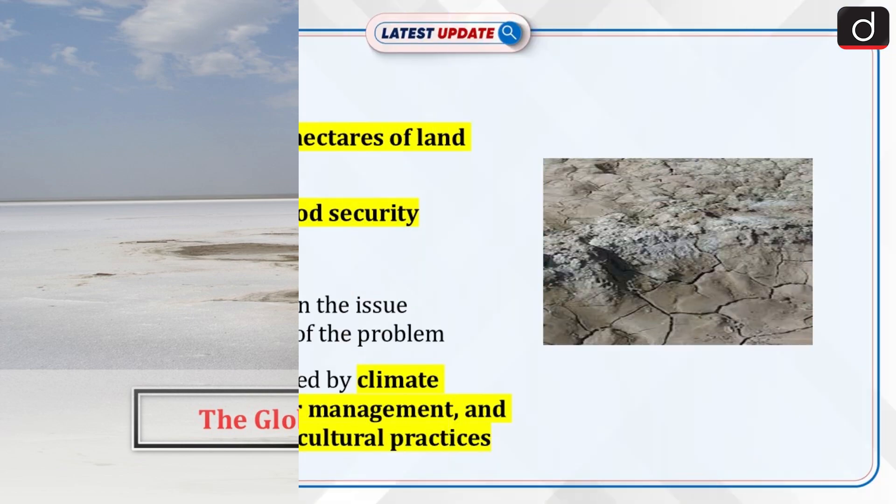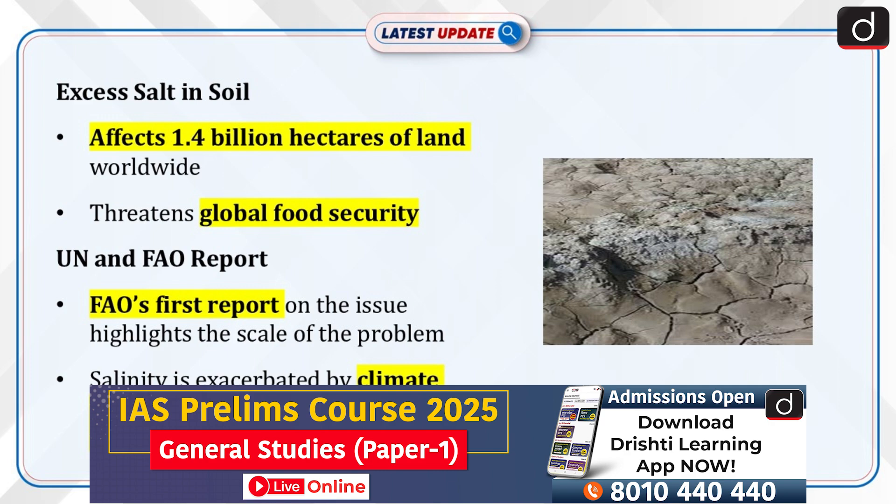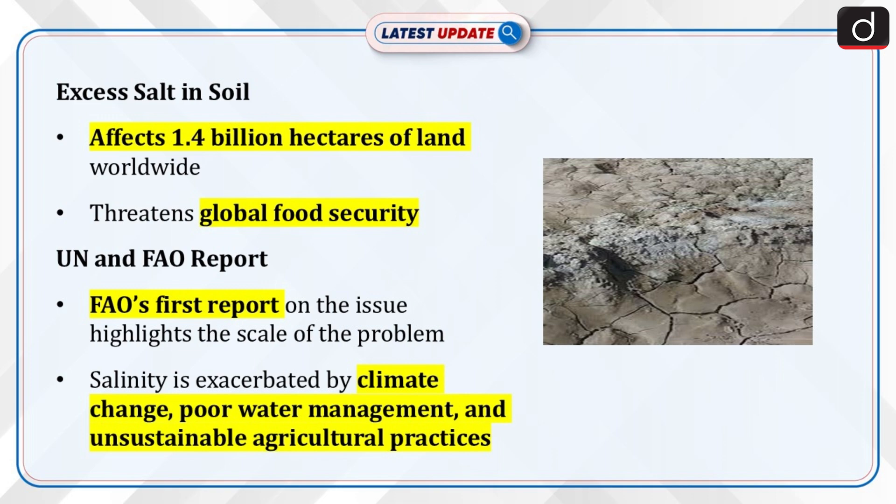A recent UN report reveals that excess salt in the soil affects 1.4 billion hectares of land worldwide, threatening global food security. The FAO, Food and Agriculture Organization, published its first report on soil salinity, highlighting the worsening situation of saline-affected land.